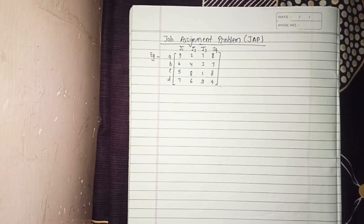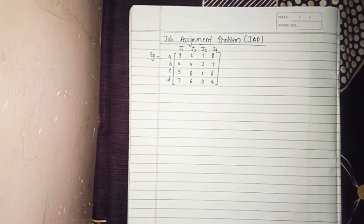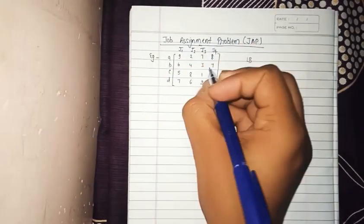In the assignment problem, we will discuss the Job Assignment Problem (JAP) using this example, and we will use the branch and bound method. Our main target in the job assignment problem is to minimize cost. We will find out the lower bound of this matrix.